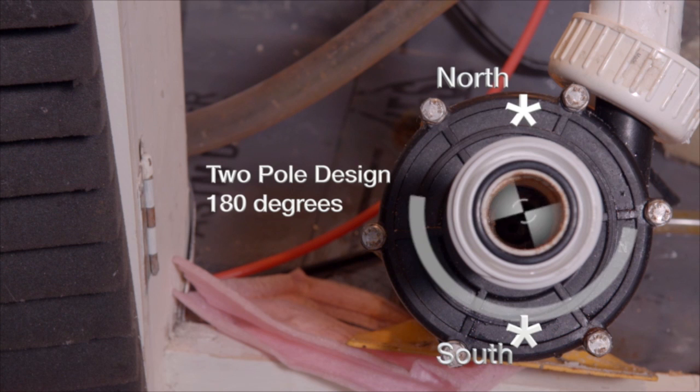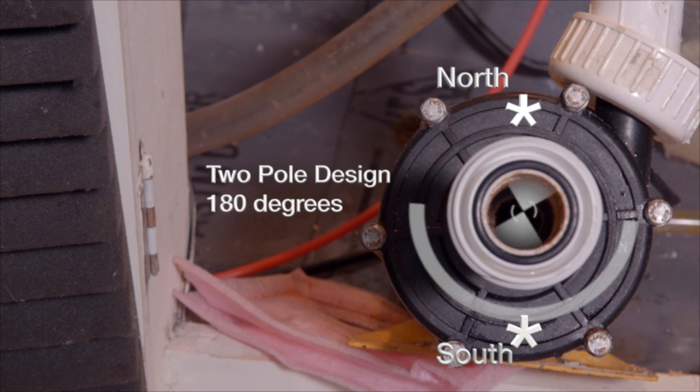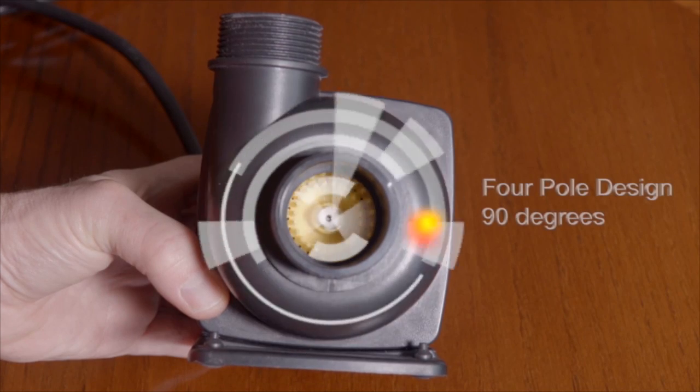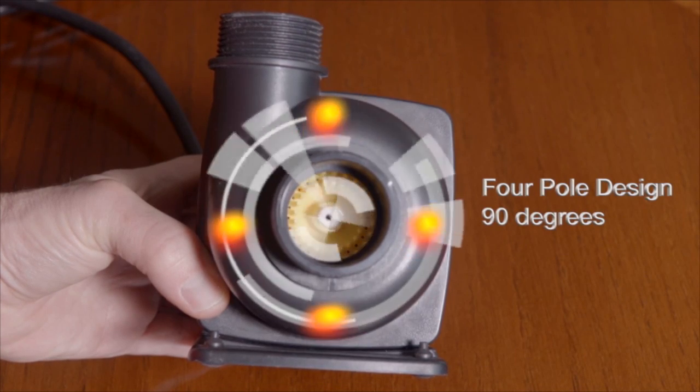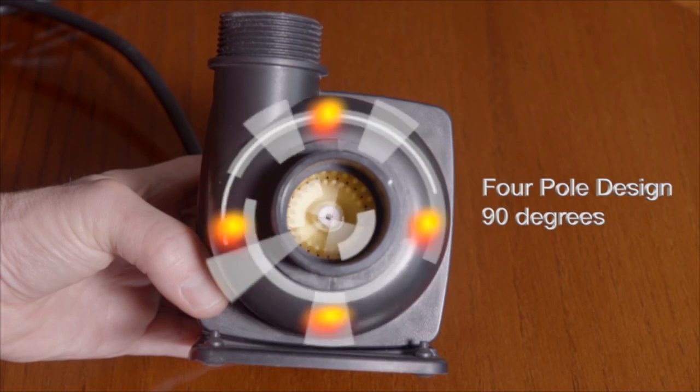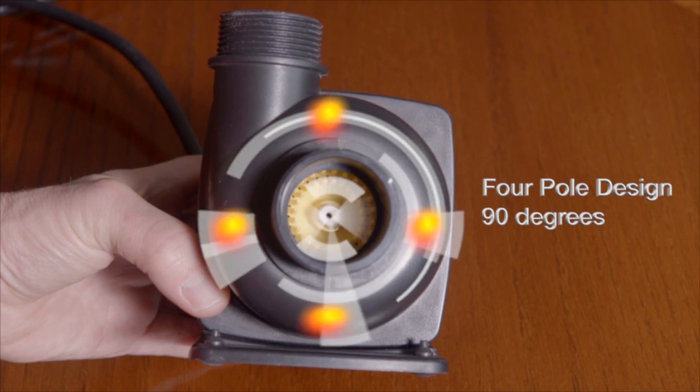When electricity is on, the shaft turns 180 degrees, then turns another 180 degrees, half circles. With these large turns, the pumps begin to have vibration. Our DC pumps have four pole designs, not two. The shaft turns 90 degrees at a time, thus the pump vibration is much less than the AC pump design.